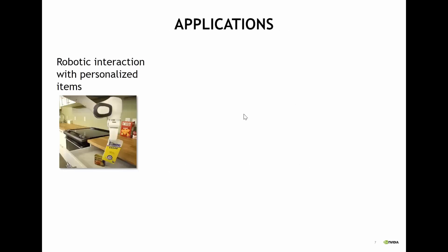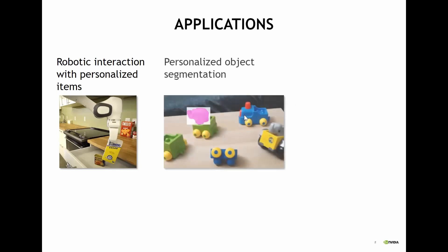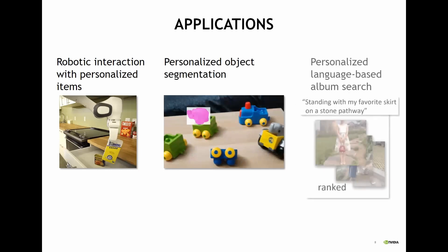There are a few applications that can be tackled. One is to teach a robot to bring us our personalized object — we want the robot to bring our specific cornflakes, not some other box. We also want to do personalized segmentation as shown before, and we might want to retrieve an image in a personalized way, for example finding our picture with a specific item in hand from our entire photo album.